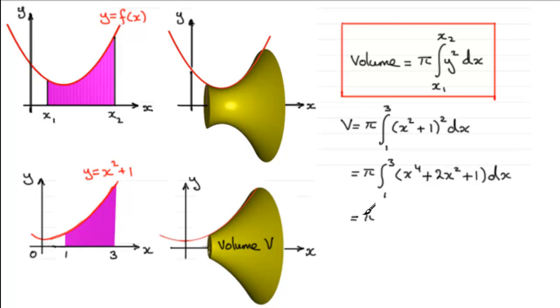And integrating this gives us, well, x to the power 5 over 5 for that first term. Integrate the 2x squared with respect to x and we get 2x cubed over 3. And finally integrating 1 with respect to x just gives us x. And that's going between the limits then, 1 to 3.